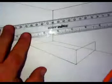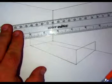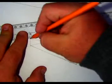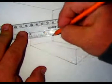Go ahead and do the criss-cross lines for the back of your bed. The end of my bed here should go through my vanishing point on the right and it should stop right about at the corner.